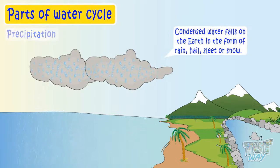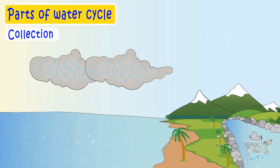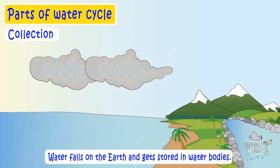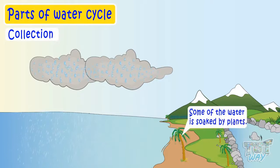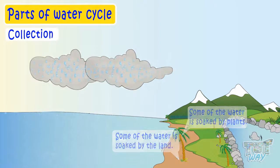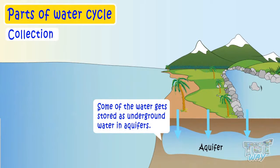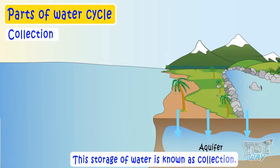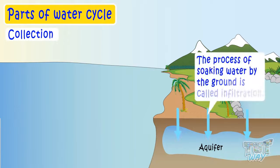Through precipitation, water falls back on earth and gets stored in water bodies. And also, some of the water is soaked by plants. Some is soaked by land. Some of the water gets stored as underground water in aquifers. And this is called collection of water. And the process of soaking water by the ground is called infiltration.